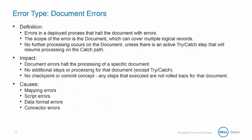The next type of error is the document error. These errors halt the error document or documents, and the scope of the error is that specific document, which no longer continues processing except with the try-catch shape. The impact is that only a specific document halts and is no longer processed. Again, there is no rollback for previous shapes. Some common causes of document errors are mapping, script errors, data format errors, and connector errors.